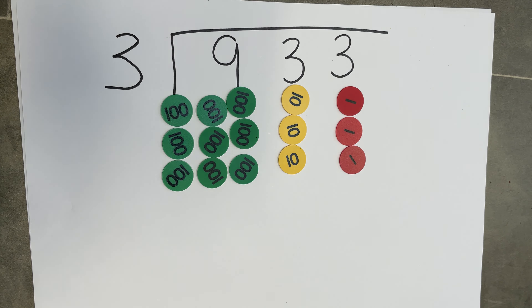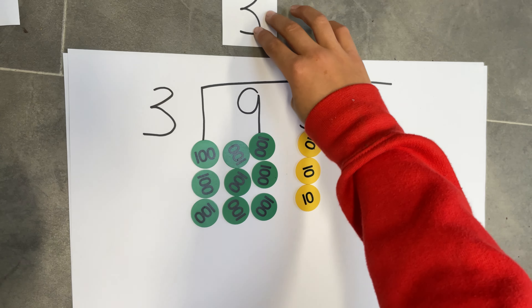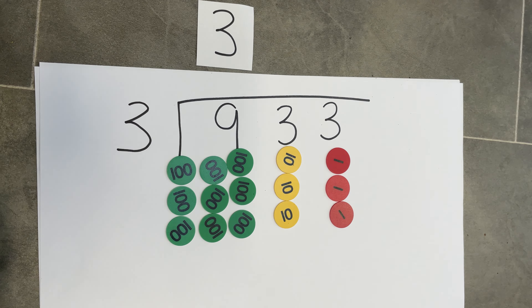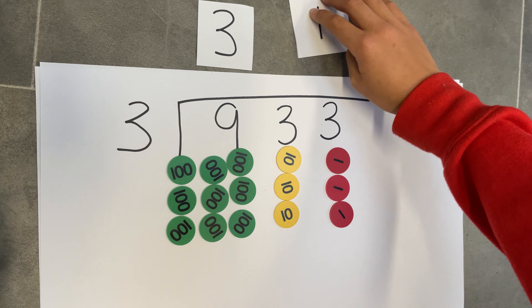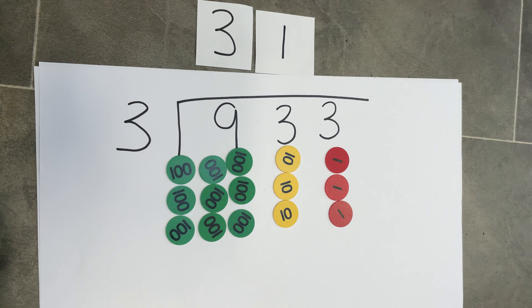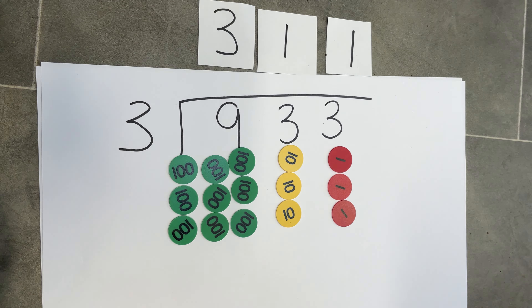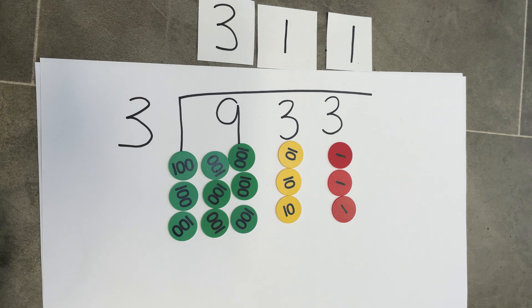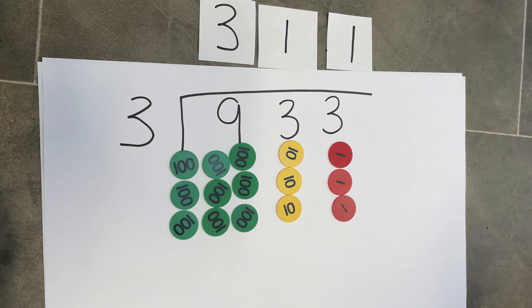There are three groups of hundreds, one group of tens, and one group of ones, and that shows our answer of three hundred and eleven.